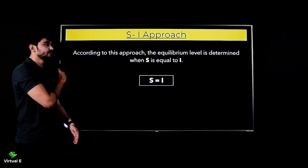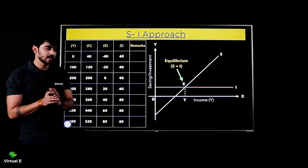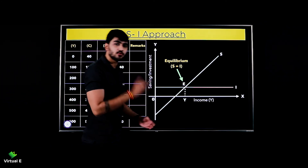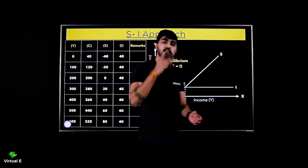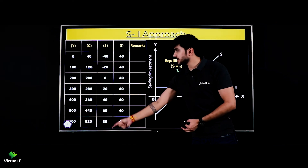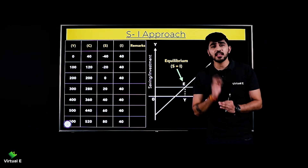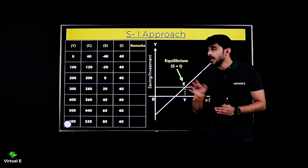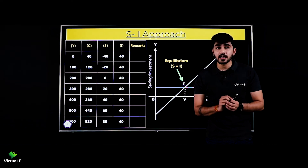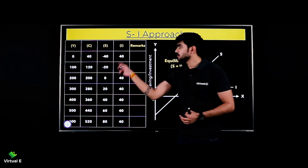Ab ek photo dekh lete hain, same sum lete hain. Aapko income dere kya - zero, hundred, two hundred, three hundred, four hundred, five hundred, and six hundred. Aapko consumption dere kya, aapko savings dere kya, or aapko investment dere kya. Hame nikalna hai equilibrium point - equilibrium kya? When your S is equal to your I.